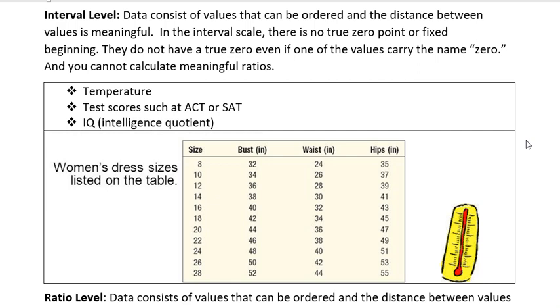Temperature. You could be at zero degrees, but there's also negative temperatures, right? So it's not a starting point at zero. Test scores such as ACT and SAT are interval level data. They don't have a true zero point. Nobody can take one of those tests and get zero.